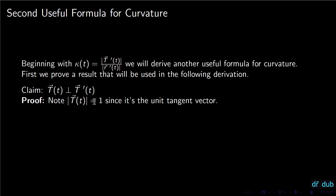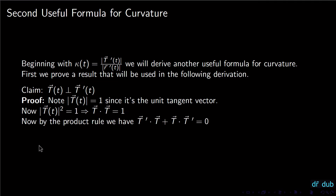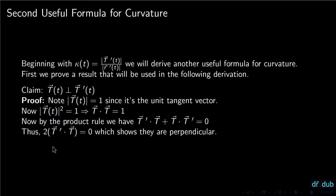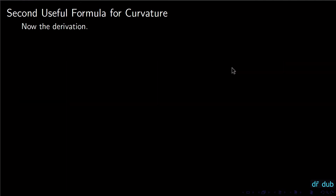Note that the magnitude of the unit tangent vector T equals 1, since it's a unit vector. We can square it and it's still equal to 1. The magnitude squared is just the dot product T·T = 1. Differentiating both sides with respect to t and applying the product rule gives T'·T + T·T' = 0, which is 2(T'·T) = 0. This shows that T' and T are indeed perpendicular — their dot product is zero.